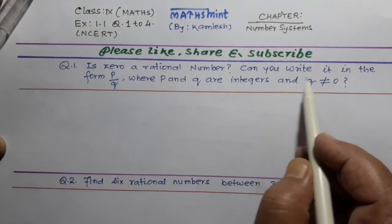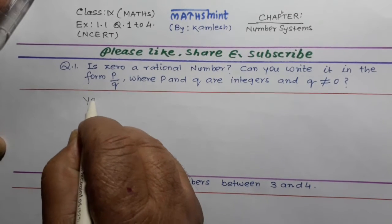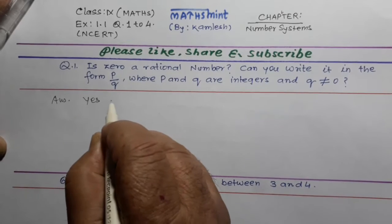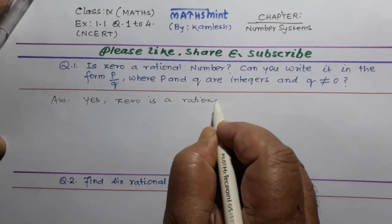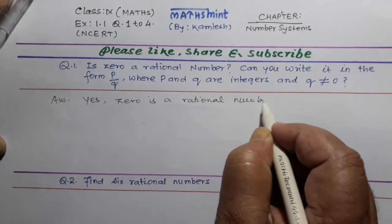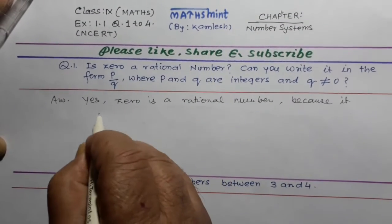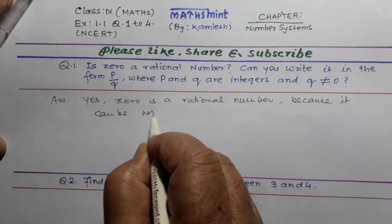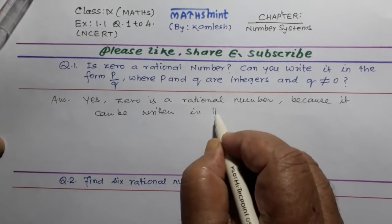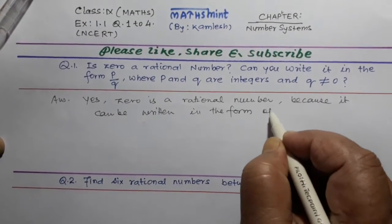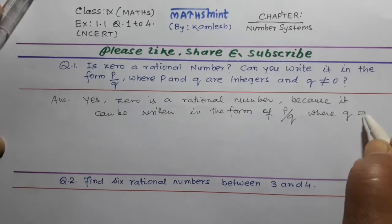Question 1: Is zero a rational number? Can you write it in the form of P by Q? The answer will be: Yes. Zero is a rational number because it can be written in the form of P by Q where Q is not equal to zero.